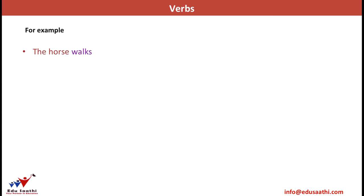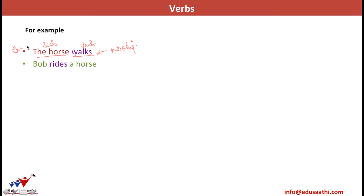For example, 'The horse walks.' Walks is the verb because it justifies an action taking place. Who walks? The horse — horse becomes the subject. But there is no object in this sentence. Since there is no object, the verb is an intransitive verb. But in the sentence 'Bob rides the horse,' rides is the verb. Who rides? Bob — he becomes the subject. And what does he ride? A horse — it becomes the object. So since it has an object, it is a transitive verb.